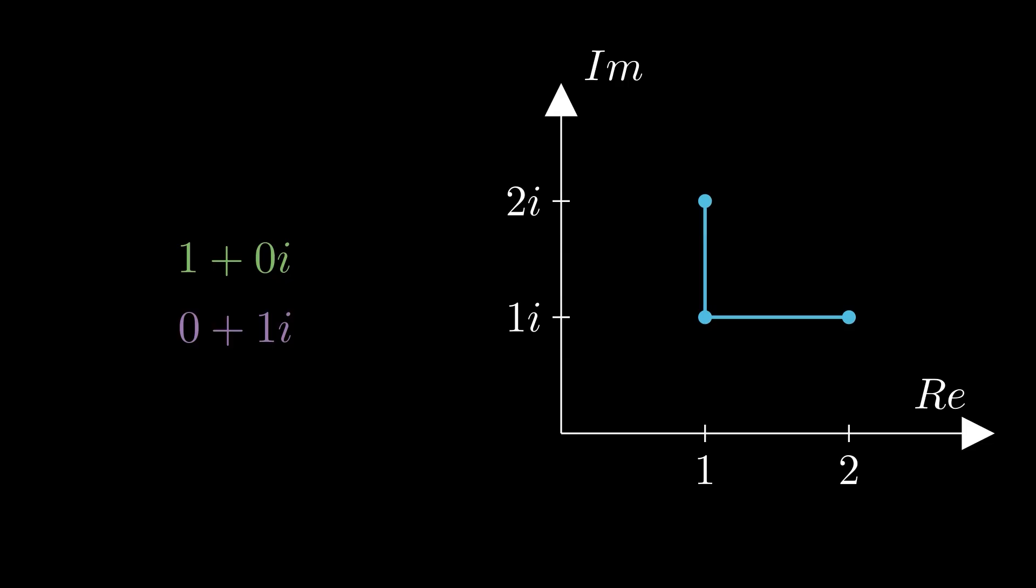Now, we can compute the length of these vectors. When we have a complex vector of the form a plus b i, we can compute the length as the square root of a squared plus b squared. Let's plug in our two vectors. The first vector just becomes the square root of 1 squared, which equals 1.